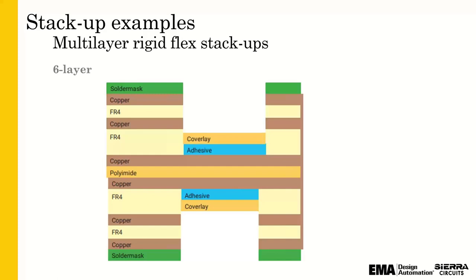Be careful in your stack ups that you don't want your flex regions to have too much copper, because excessive copper is going to be harder to bend and you might not achieve your bend radius — you might end up with cracking in the copper. If you're doing a ground pour across the flex, instead of a solid ground pour as you would on a rigid board, you'd want to do a crosshatch. From an etching standpoint, we like a 10 mil line for your crosshatch.